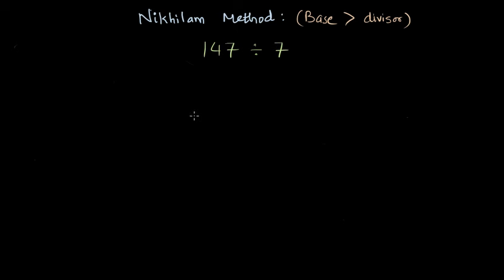So let's try to solve this using Nikhilam method. First of all, we will have to find out the supplement divisor and the supplement divisor is going to be 10 minus 7 is equal to 3.